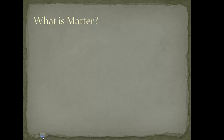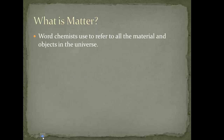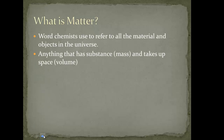How do chemists look at what is matter in the universe? They refer to it as all the material and objects that make up the universe and are found within the universe. It is also anything that has mass and takes up space. If it doesn't have these two properties, we don't consider it matter.